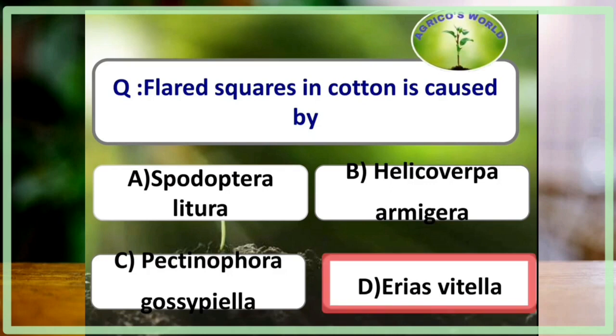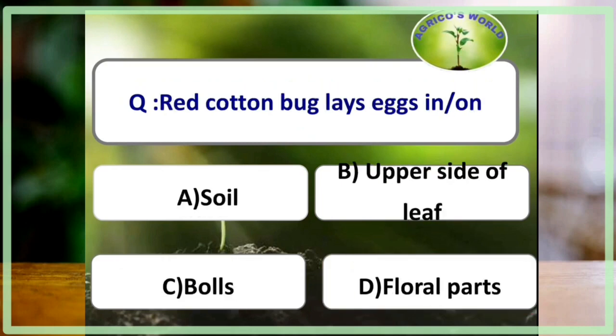Flared squares in cotton is caused by Earias vittella, the spotted bollworm. Earias vittella also causes the shedding of early-formed flower buds, that is, squares.